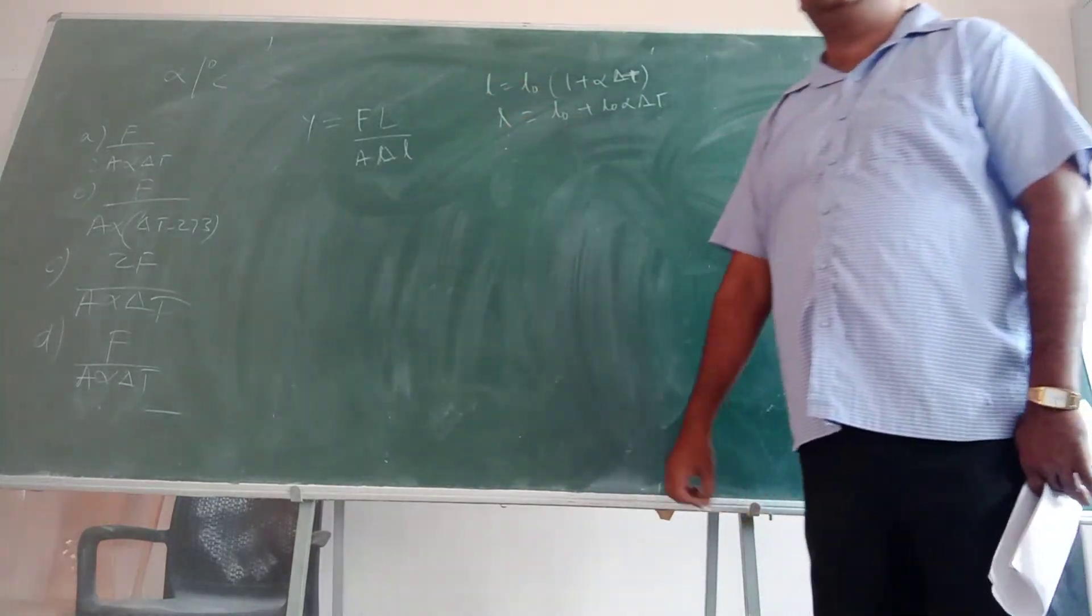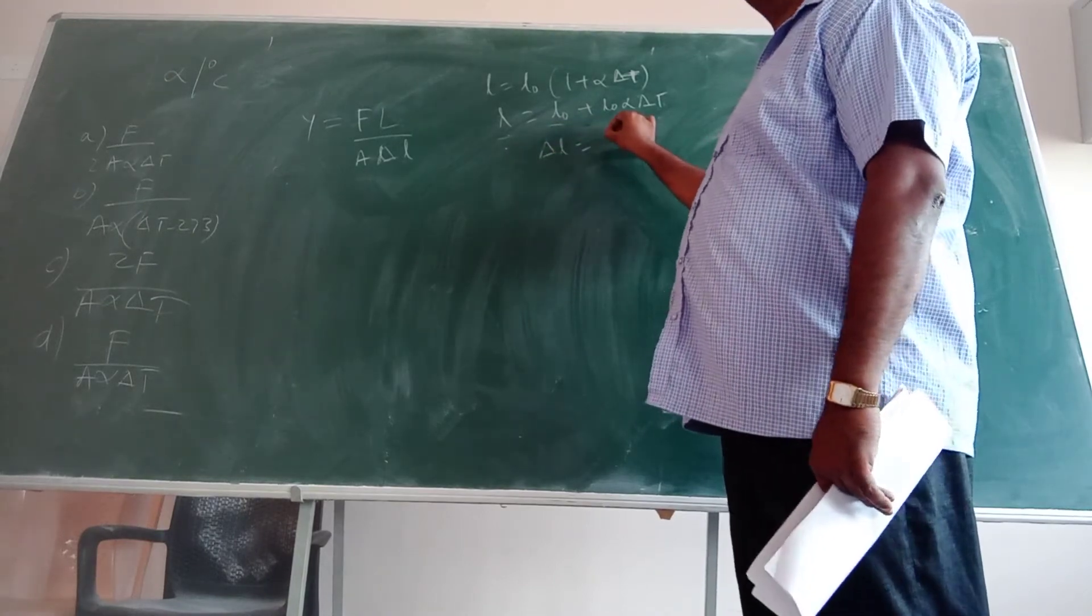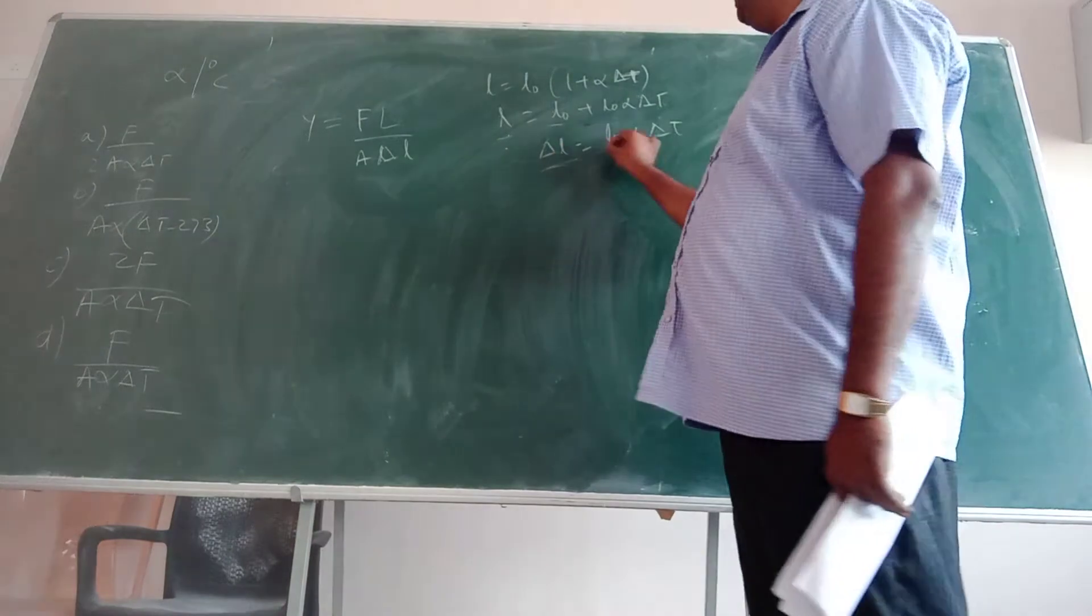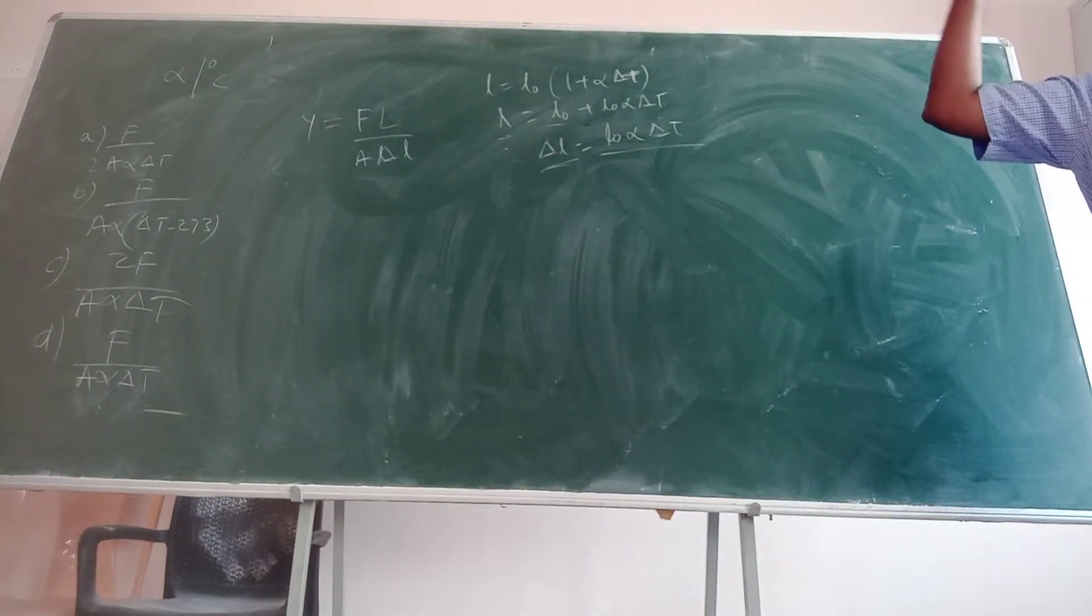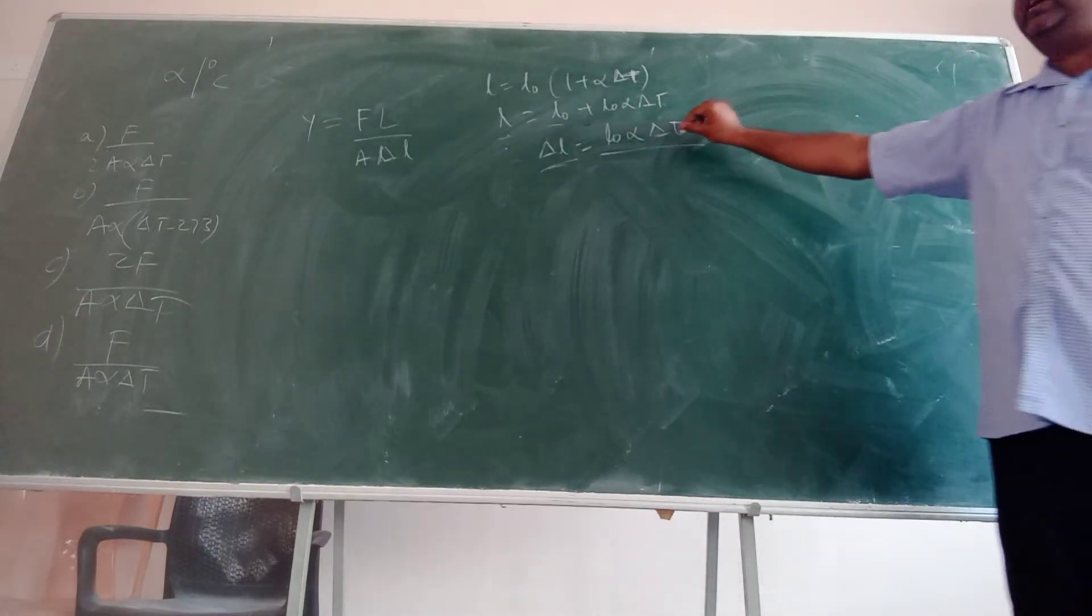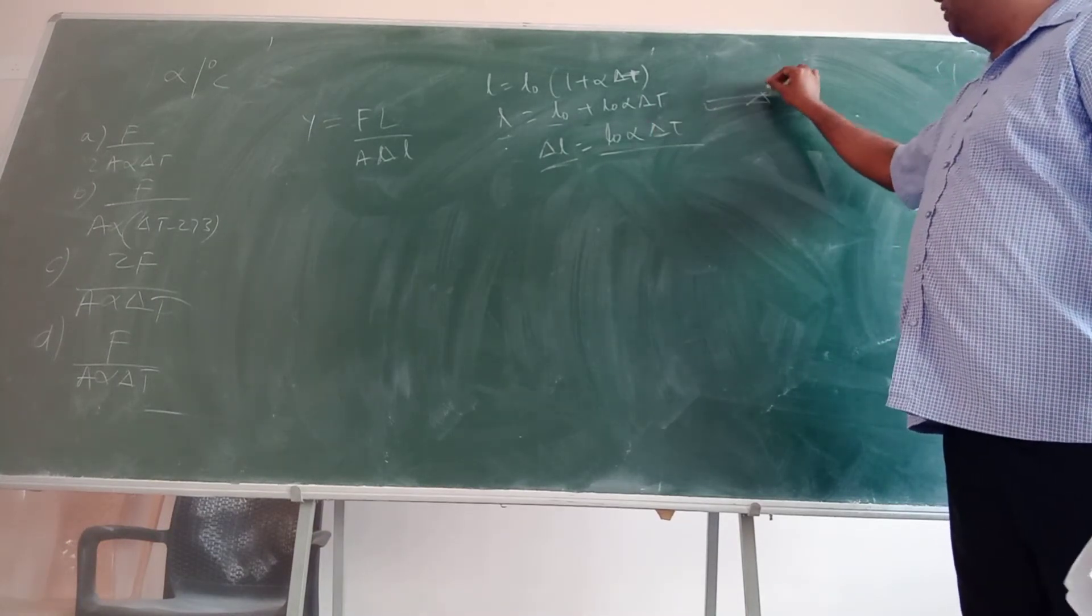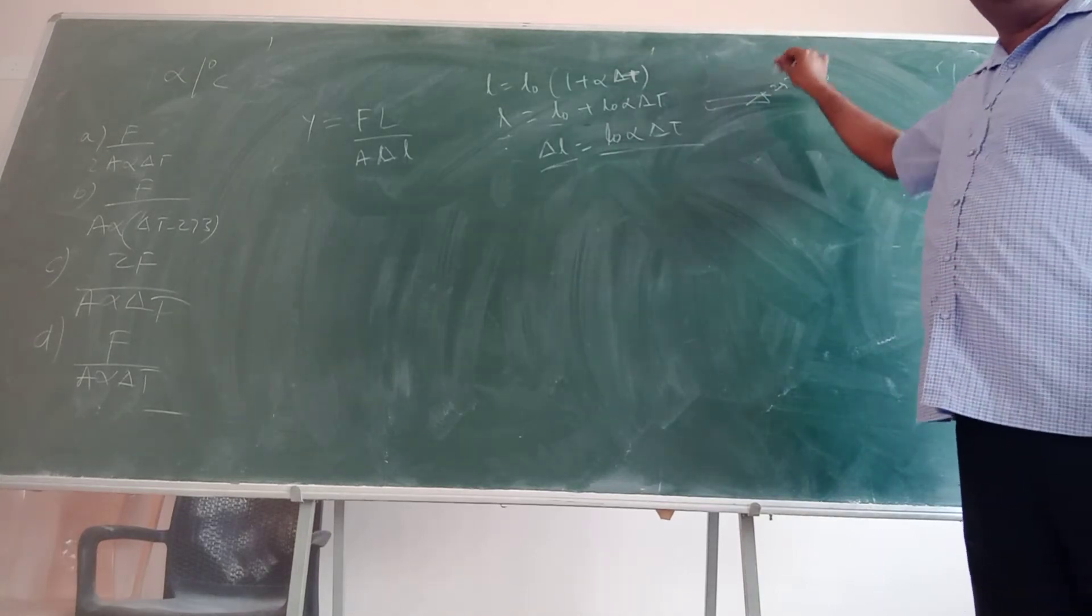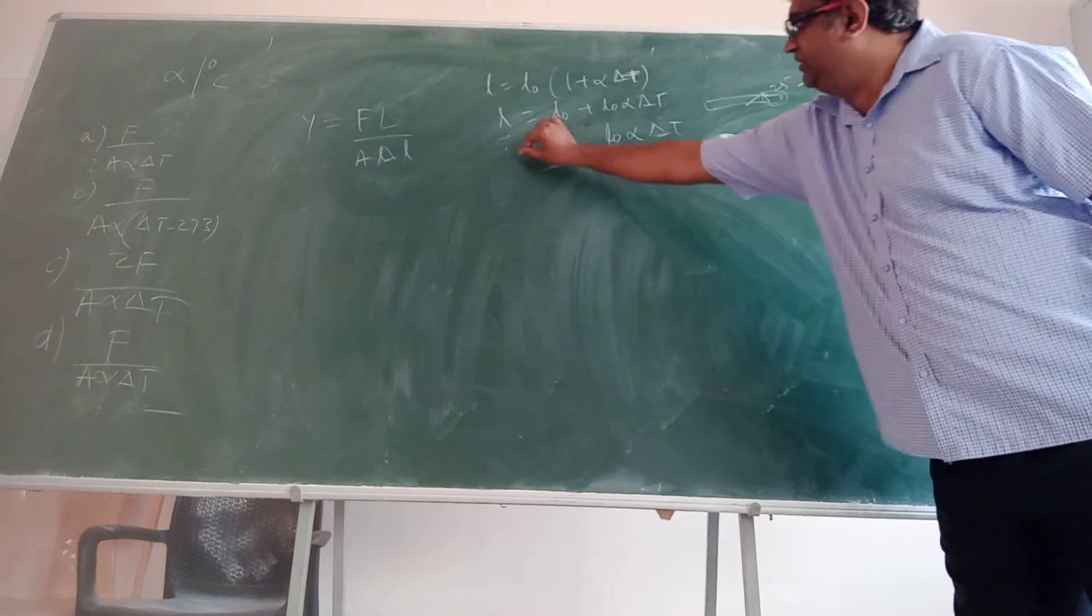So L naught plus L naught into alpha delta T. This is what it is. So what is this? L minus L naught. That is what is your delta L. What is the delta L? It is L naught into alpha delta T. If it is at some other temperature, you will write L of T into alpha delta T. What is this delta T? Let us say the rod was from 25 to 30 degrees, it raised 5 degrees. So it will expand. This small delta L depends on what? On the material.